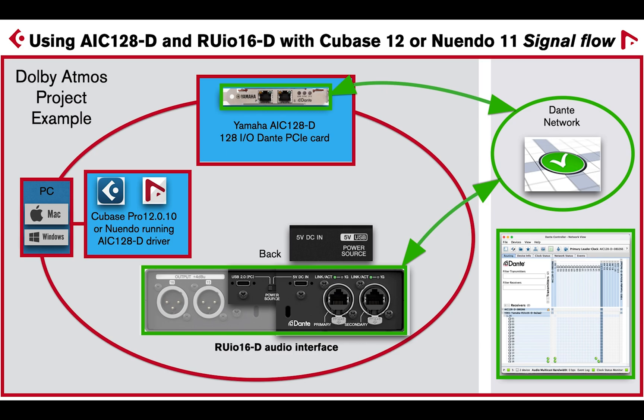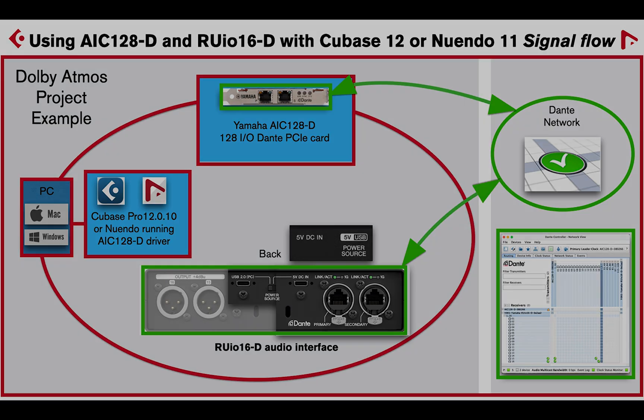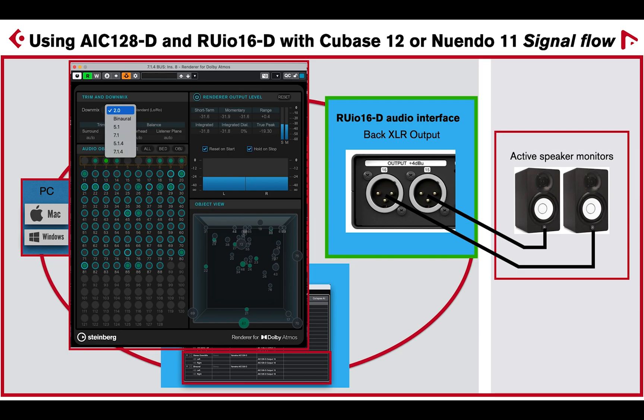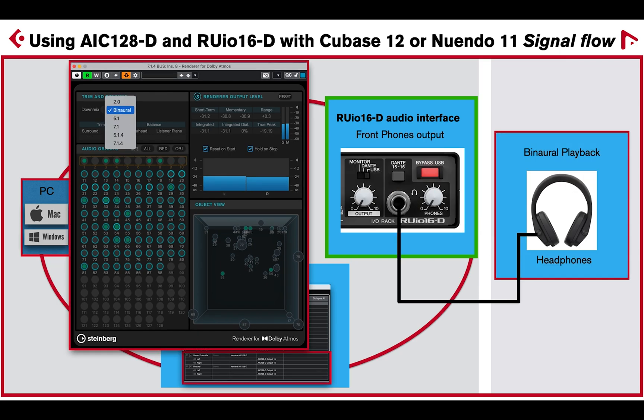In this Dolby Atmos project example, the Yamaha RU-IO 16D audio interface can provide 2.0 stereo downmix analog playback from the VST Dolby Atmos renderer, and binaural playback to the headphone output of the RU-IO 16D.